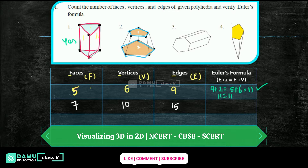Checking Euler's formula: edges 15 plus 2 equals 17; faces plus vertices = 7 plus 10 = 17. So 17 equals 17 — Euler's formula is also applicable here. We are substituting in E plus 2 equals F plus V to check.